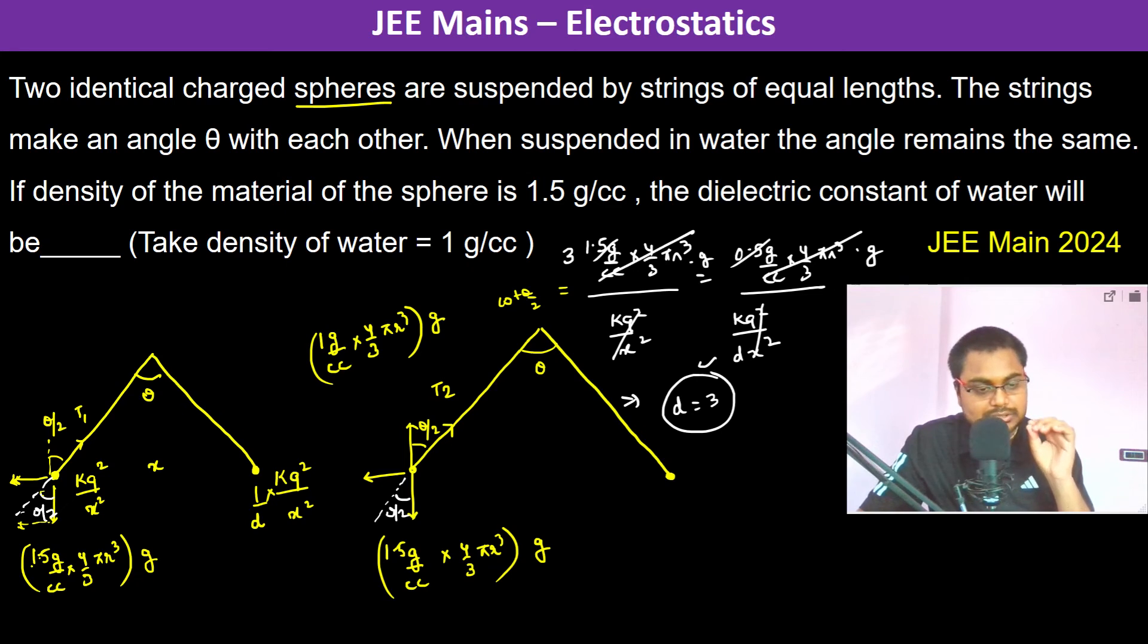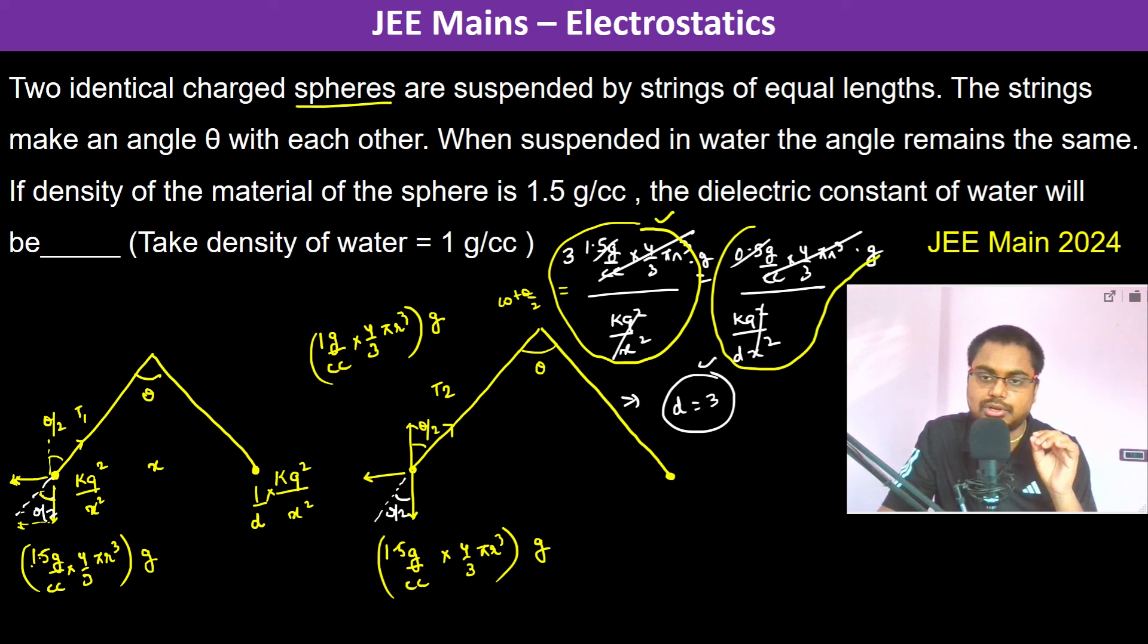So therefore cot theta by 2 is this entire thing, and this is also cot theta by 2 only, because the angle is again the same.